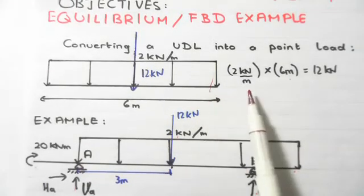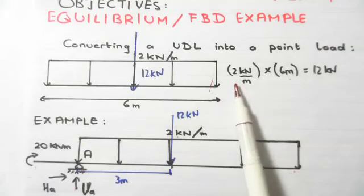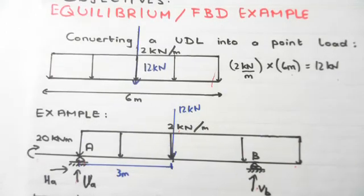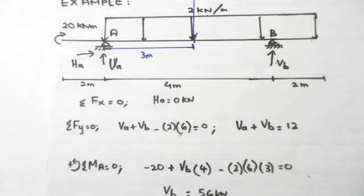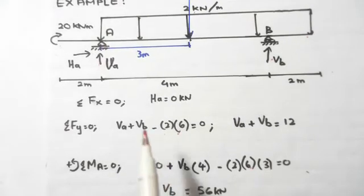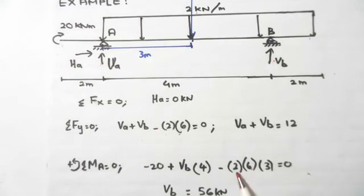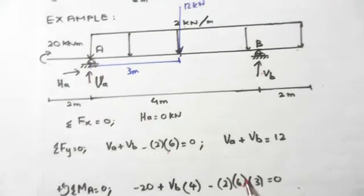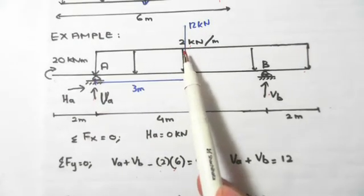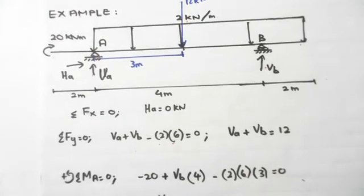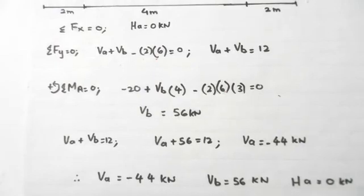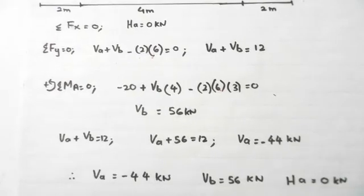To summarize: the key steps are understanding how to convert a UDL into a point load by multiplying the UDL by its span. Remember that a clockwise moment is negative and an anti-clockwise moment is positive. The tricky part was the term minus two times six times three — minus two is the UDL magnitude, multiplied by six to convert it to a point load over the span, then multiplied by three as the lever arm from point A. We used sum of forces and sum of moments about a point equal to zero to find all reaction forces.